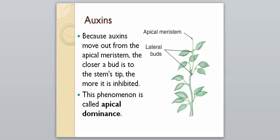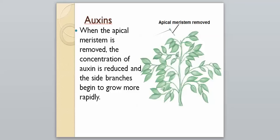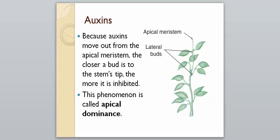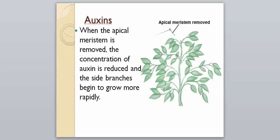Apical dominance means that lateral buds at the top are more inhibited than those at the bottom — we can see three leaves branching off lower on the stem versus only one near the top, because there's more auxin towards the top. However, when our apical meristem is removed, our concentration of auxin is reduced and the side branches begin to grow more rapidly. Once we remove the top area where all auxins are coming from, the plant branches will kind of explode and grow much more rapidly.